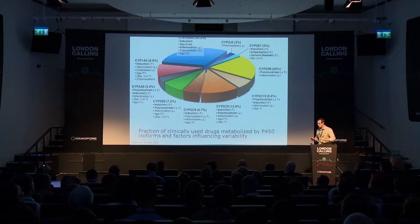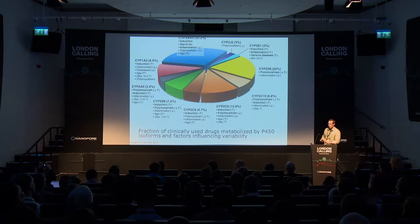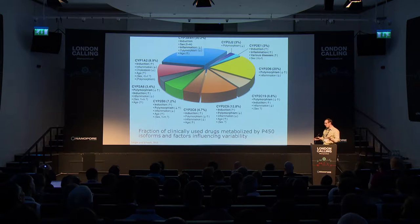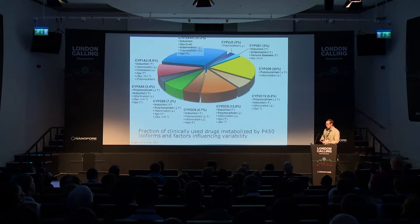A classical example: as you may have noticed, there's differential response to alcohol when consumed. Part of that can be attributed to how much you drink, but also to variance in alcohol dehydrogenase. Some individuals get red in the face and can't metabolize it as quickly. The same thing is observed in general with all drugs.